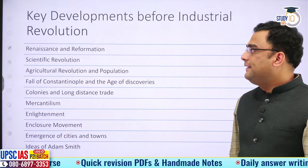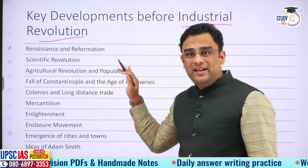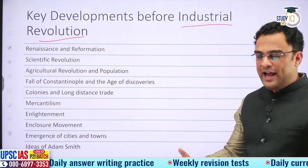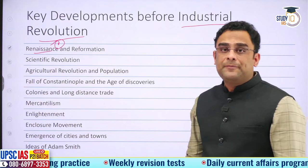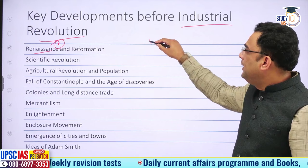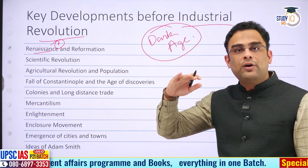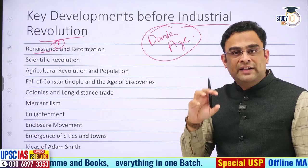Now let us see some key developments before industrial revolution — a bit of background regarding IR. First and foremost, we see the age of renaissance in Europe. This age of renaissance brought Europe out of what was called its dark age. During medieval times, Europe was in a deep slumber, having forgotten its ancient glories of Roman and Greek civilizations.